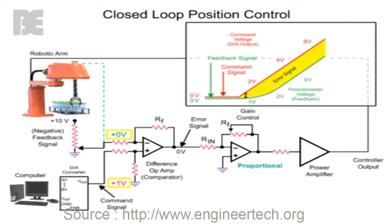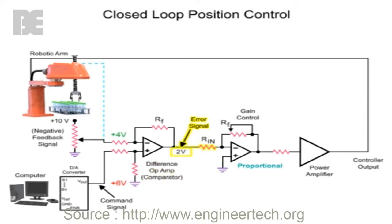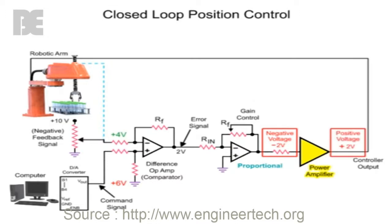In this system, there is not an immediate response by the robotic arm to the command signal. The delay of the arm and feedback signal creates a positive error signal voltage at the output of the difference op amp. The error signal is inverted by the proportional difference op amp to a negative voltage. The voltage is then amplified by the power amp, inverted to a positive voltage, and applied to the motor of the robotic arm.